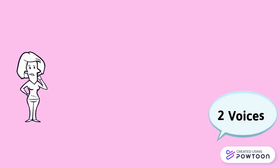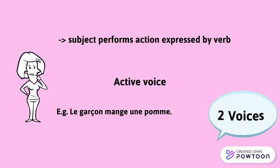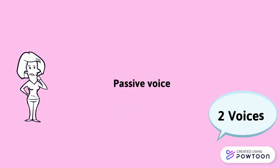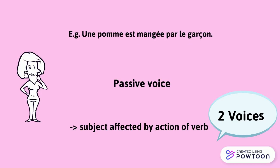There are two voices. The active voice is used when the subject performs the action expressed by the verb. For instance, Le garçon mange une pomme — the boy is eating an apple. The passive voice is used when the subject is affected by the action of the verb: Une pomme est mangée par le garçon — an apple is being eaten by the boy.